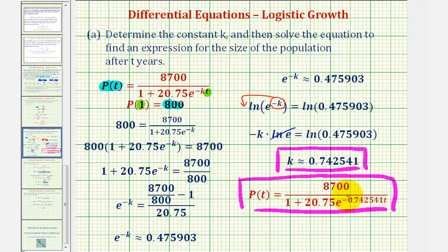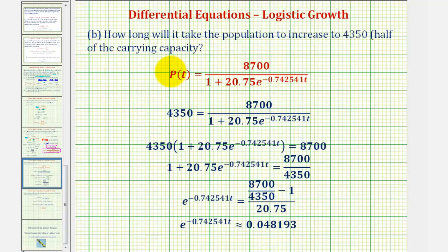For part b, we can use P(t) to determine when the fish population will reach 4,350. To do this, we'll take P(t) and substitute 4,350 for P(t), and our goal is to solve this equation for t.